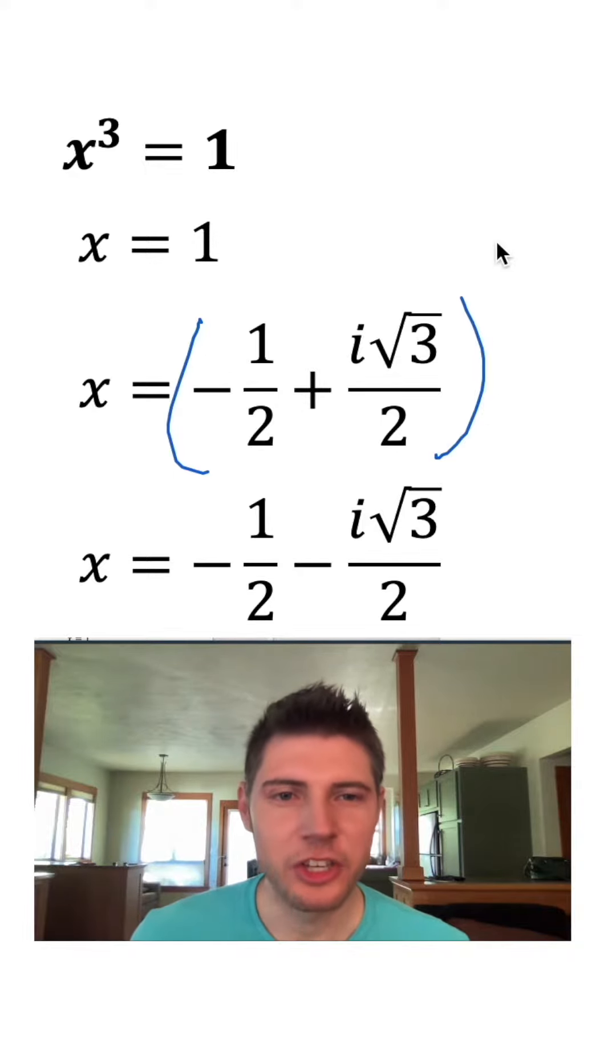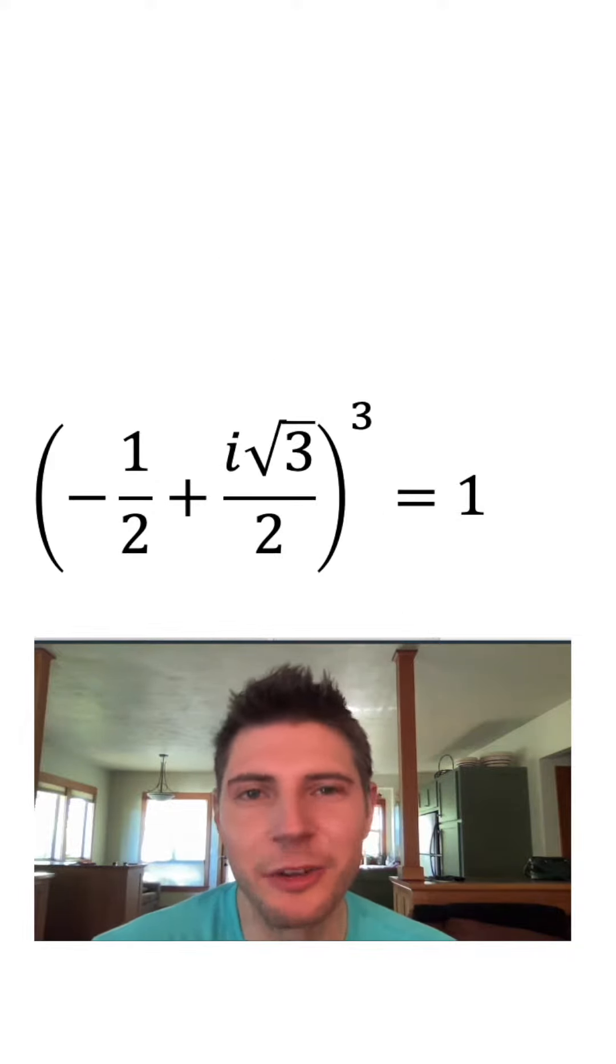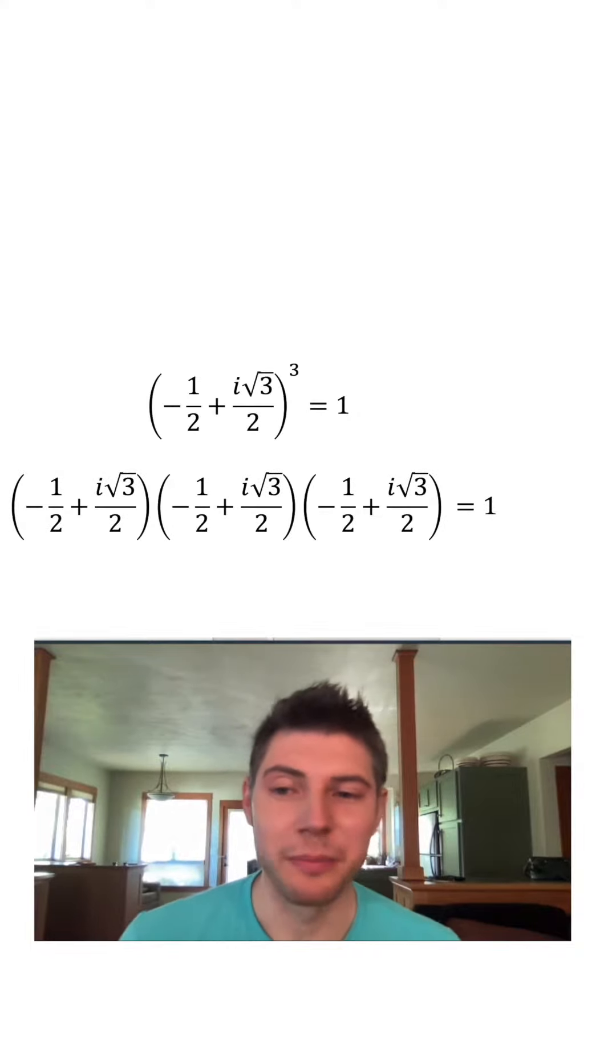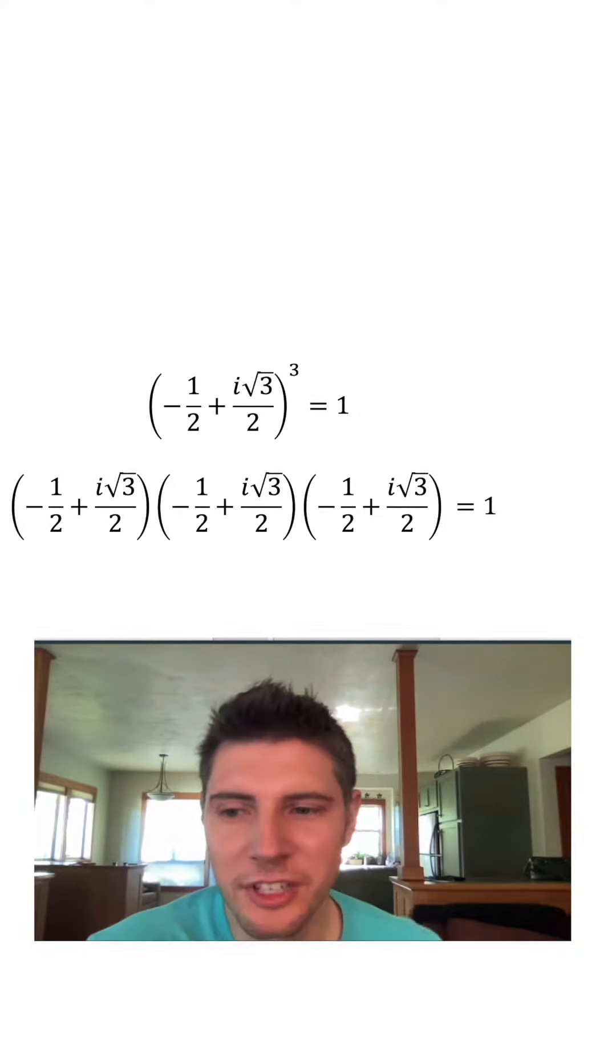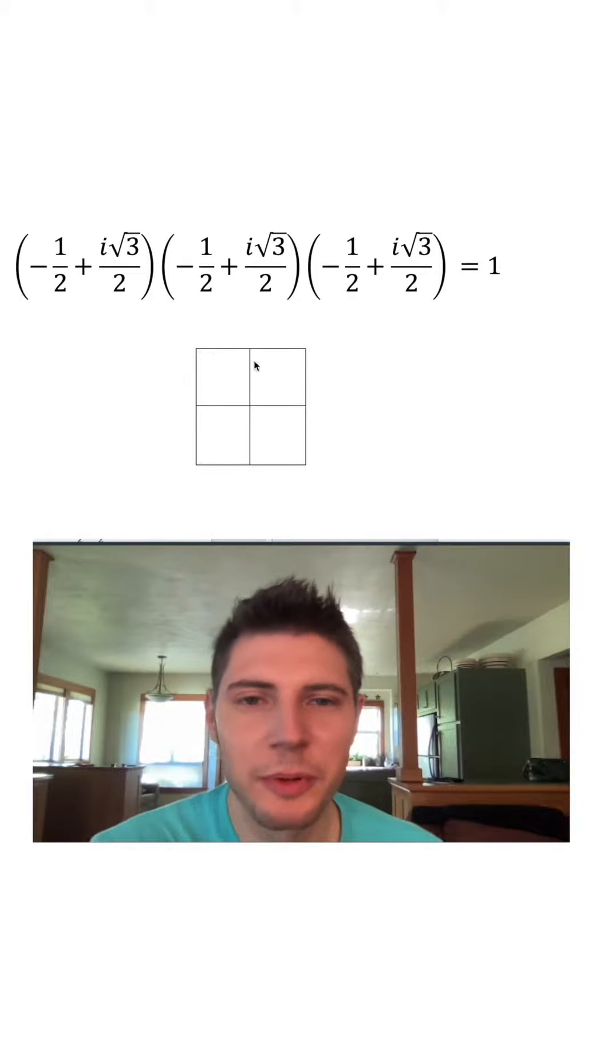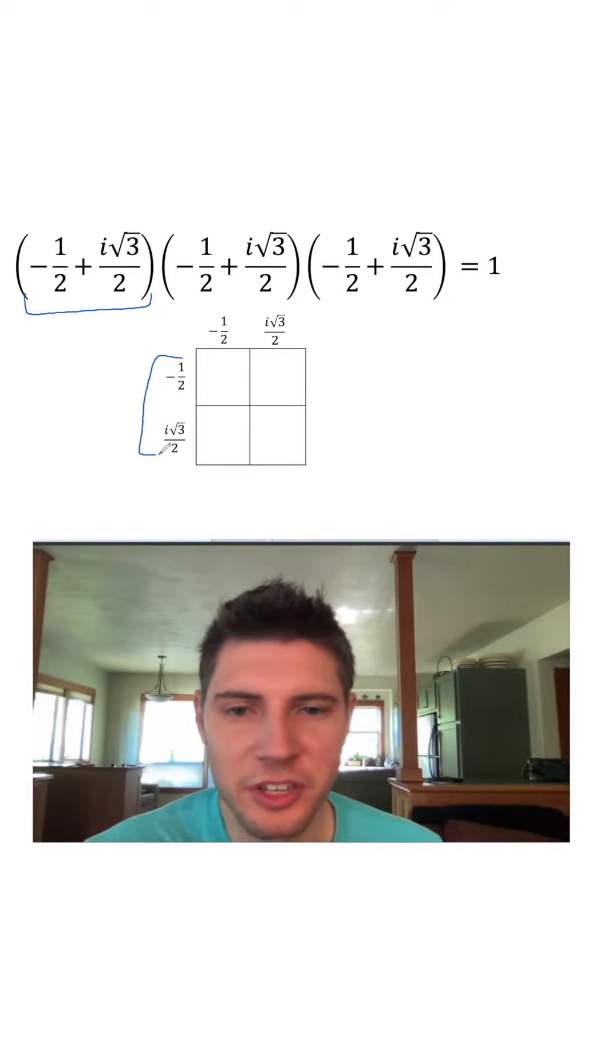So let's take this top one and let's cube it. We're basically seeing, does it equal one? Cubing it means multiply it by itself three times. I'll set up a box. To multiply this, I'm going to do these two first. So now we're multiplying this one by this one.